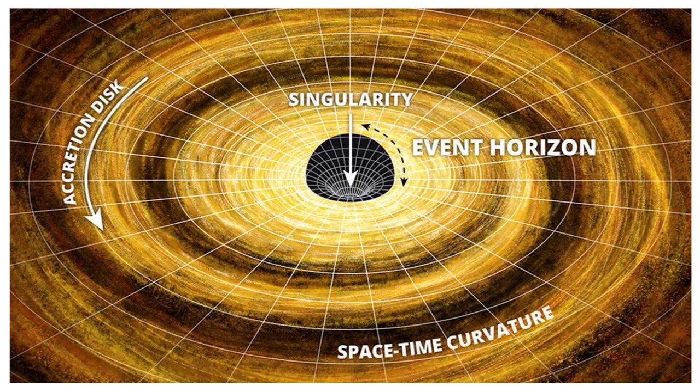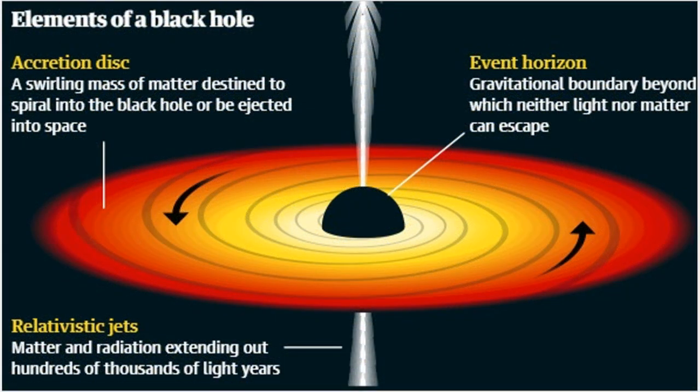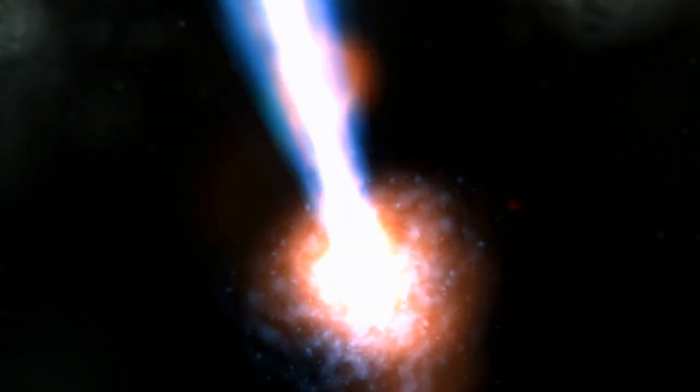Not everything drawn towards the event horizon of a black hole ends as part of the black hole. Matter in orbit around a black hole outside the event horizon forms an accretion disk. Some of this, as it loses its angular momentum, will fall towards the black hole. Matter spinning around in accretion disks bump into other particles at very high speed. And some matter and radiation are blasted back out into space. This is called an outflow and can provide another clue that the black hole is there.